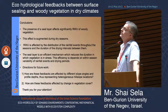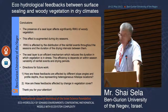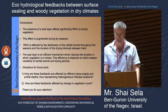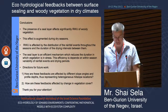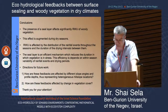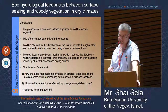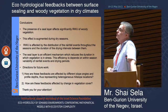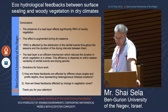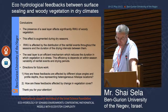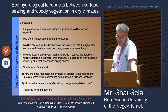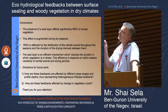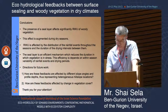Coming to my conclusions: the presence of a seal layer significantly affects root water uptake of woody vegetation, and this effect is augmented during dry seasons. Root water uptake is affected by the distribution of rainfall events through the season and the duration of drying intervals between them. The seal layer is an efficient mechanism that reduces the duration of vegetation stress, and this efficiency is dependent on within-season variability of rainfall events and drying periods. We still need to validate how this stress connects to stomatal closure in the field.